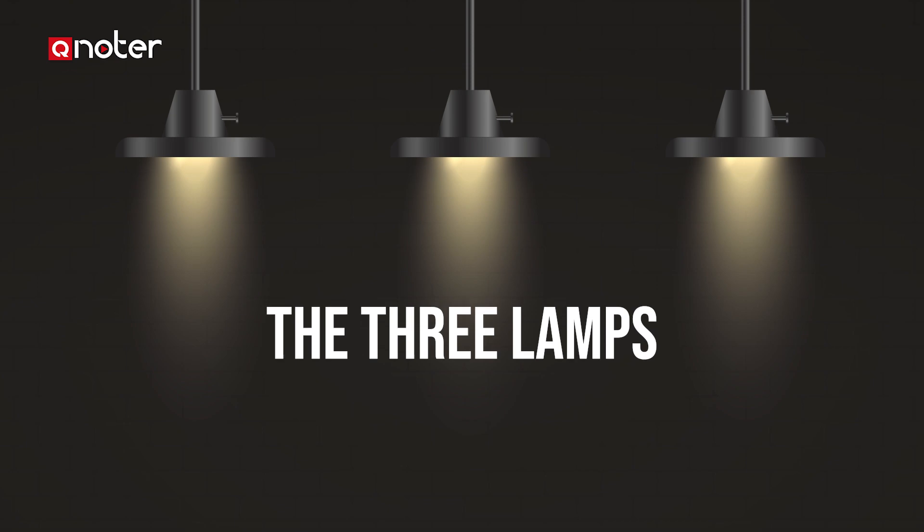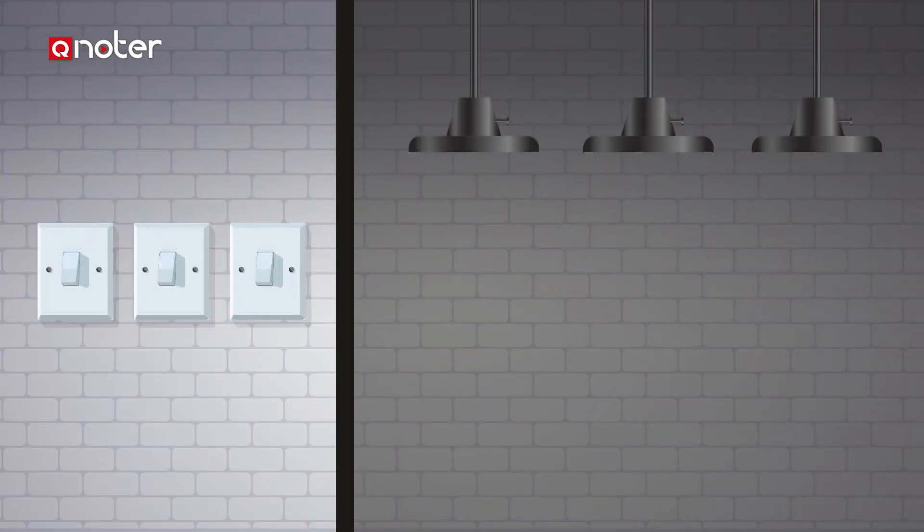The three lamps. A windowless room contains three identical light fixtures, each containing an identical light bulb. Each light is connected to one of three switches outside the room. Each bulb is switched off at present. You are outside the room and the door is closed. Before opening the door, you may play around with the light switches as many times as you like.